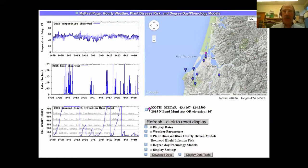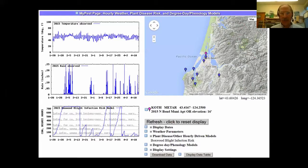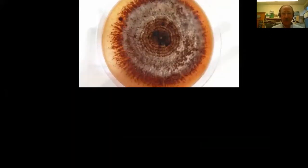This infection data has been incorporated into an online model so you can investigate conditions at your particular site — whether you're in Portland or Pilot Rock. The key biology to remember: sticky spores on leaves and stems are splash-dispersed during warm, wet rainstorms.